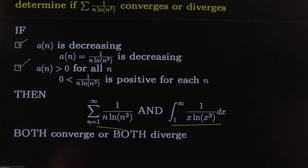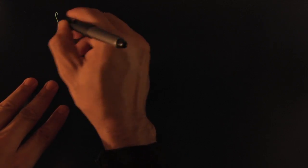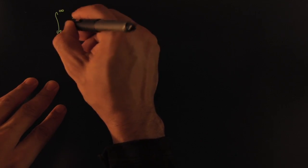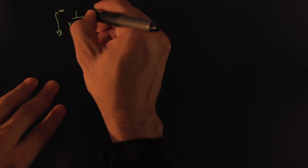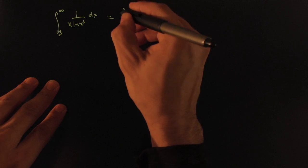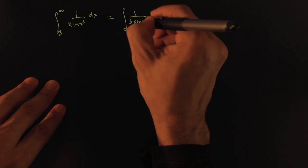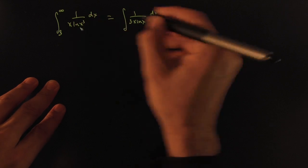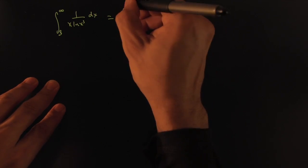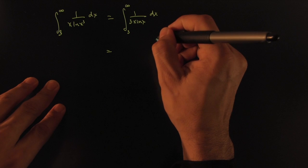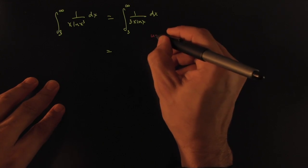I'll leave it as an exercise for you to show, well, that that's actually infinite, or maybe I'll do a little bit of it here. We'll do the integral from 3 to infinity of 1 over x ln(x³) dx. That's the same thing as the integral 1 over 3x ln(x) dx. You can bring down this 3 using your log properties from 3 to infinity.